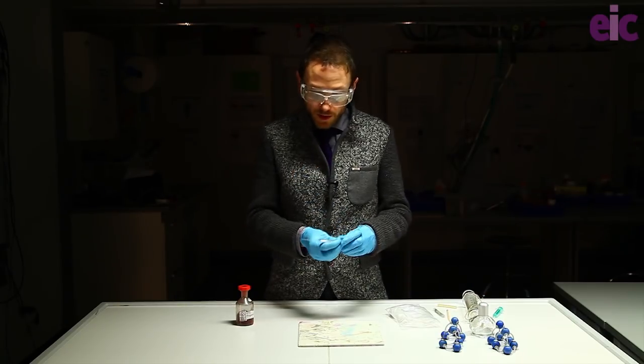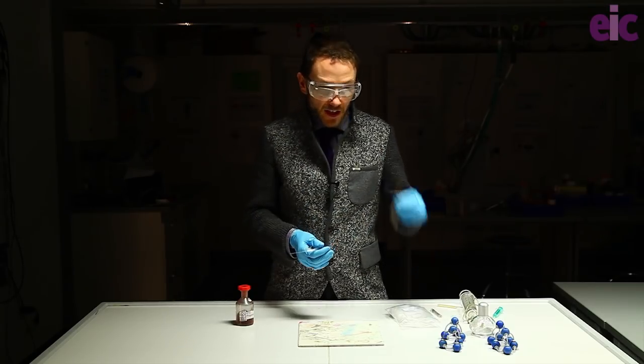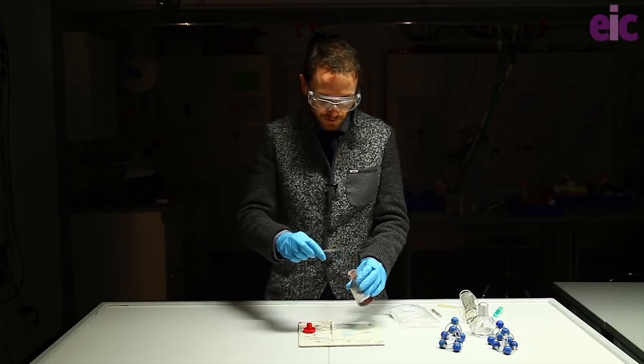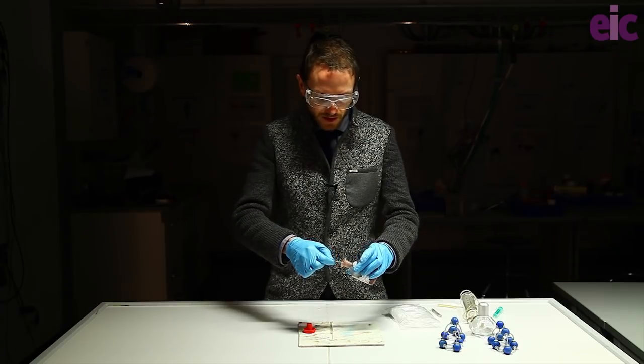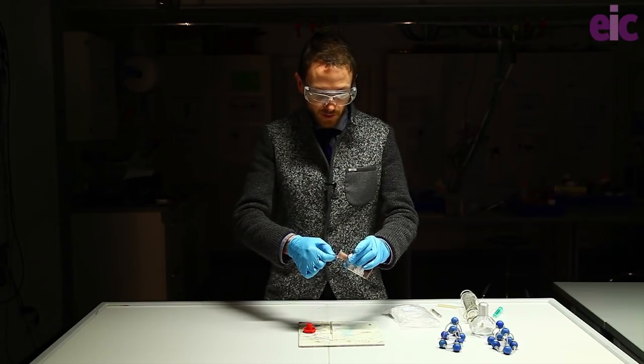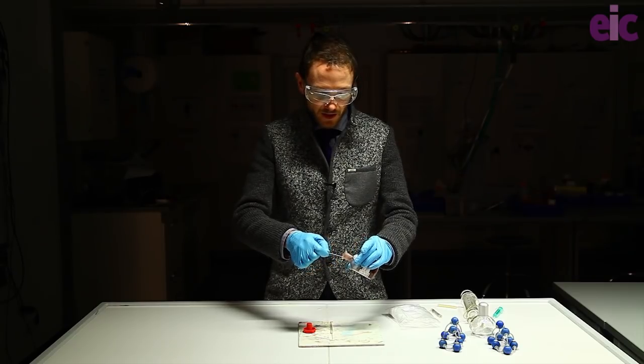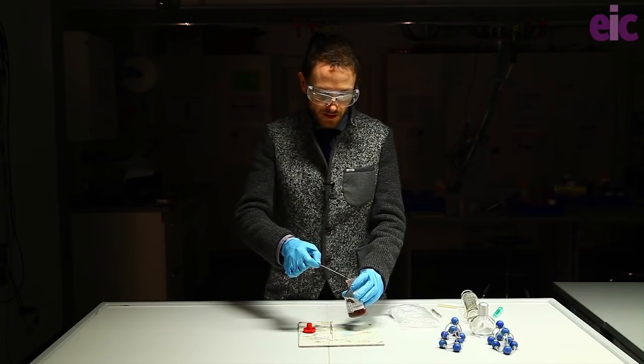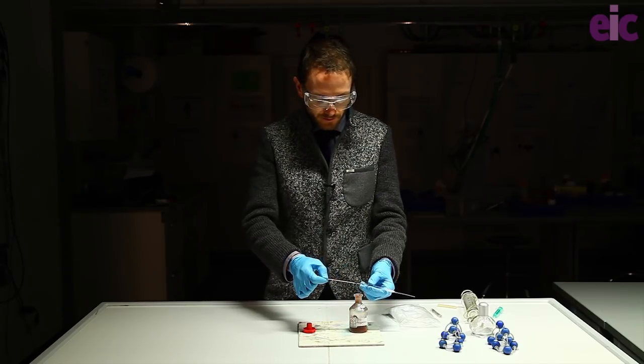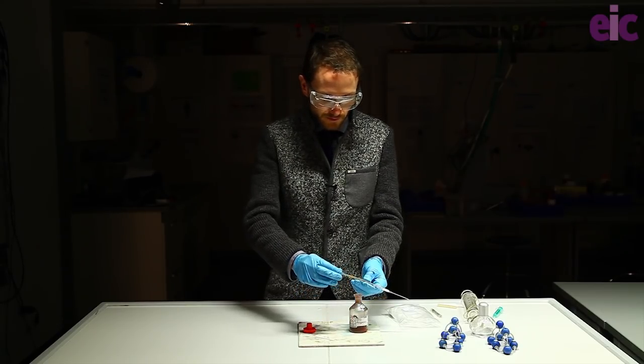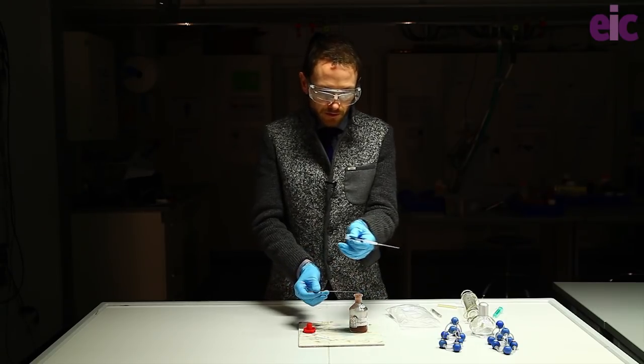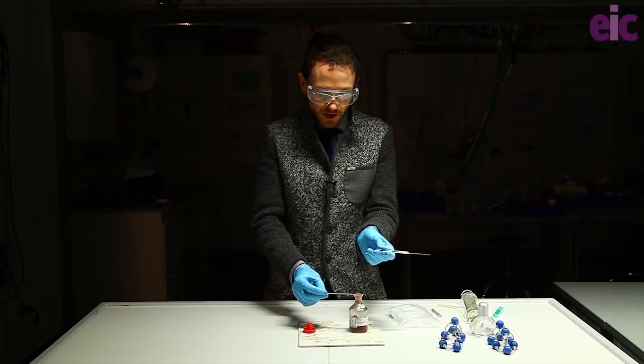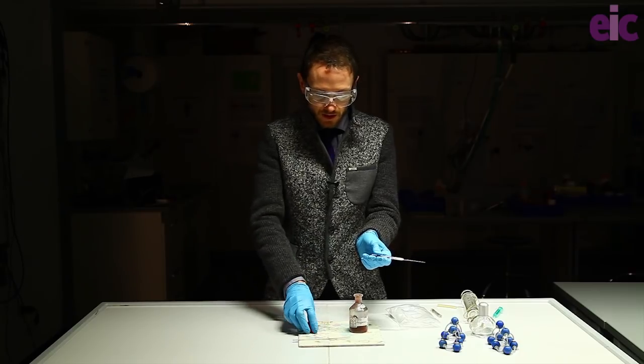Next up, micro spatula or the end of my fake wooden splint here loaded with some red phosphorus, and we're gonna just put some phosphorus on the inside of the Pasteur pipette, leaving about a centimeter gap if possible to where the end of our glass plug is. And now I've got a little piece of red phosphorus in there.